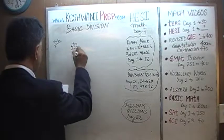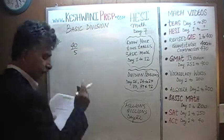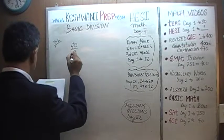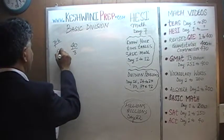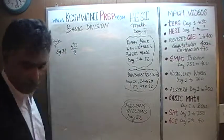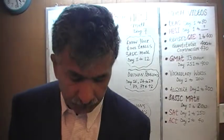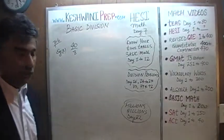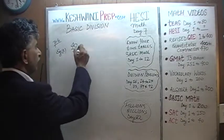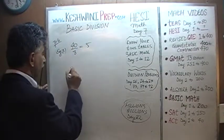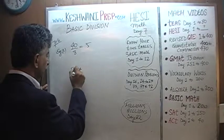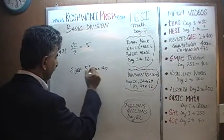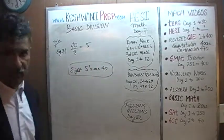Let's do the very first one. It's asking us to do 40 divided by 8. Example number 1. Again, it's a simple matter of knowing your tables. If you know your tables of 8, you will know that 8 fives are 40. The answer is 5.